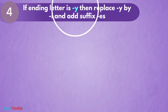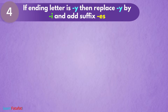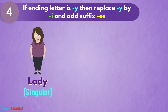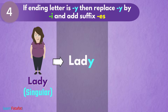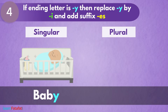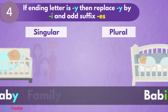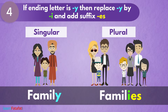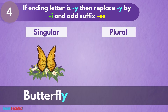If ending letter is -y, then replace -y by -i and add suffix -es. इसी तरह से अगर कोई word y से end हो रहा है जैसे lady, तो उसे plural बनाने के लिए y इस letter को i से replace करके -es suffix किया जाता है। तो lady का plural हुआ ladies। ऐसे ही baby से बना babies, family से बना families, butterfly से बना butterflies।